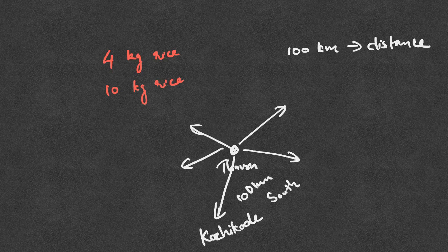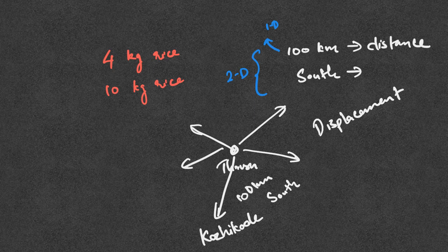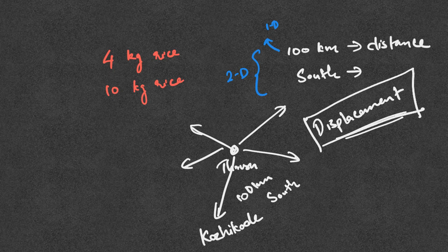We have one-dimensional information, and now we have two-dimensional information — that is, we have a magnitude as well as a direction. So we have distance, and now we have displacement. Distance is scalar — just how many kilometers, that is the information. Now with two-dimensional information for direction and distance, the displacement is a vector.